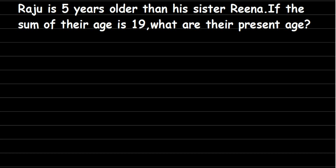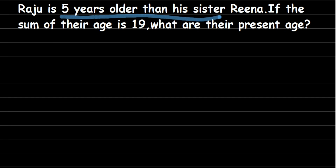Hello everyone. Here's a question asked by Gusha: Raju is five years older than his sister Reena. If the sum of their ages is 19, what are their present ages? So we have a relationship between Raju's age and his sister's age, and when you add both ages it will be 19.